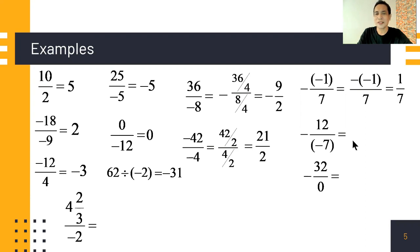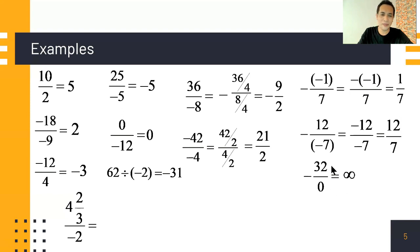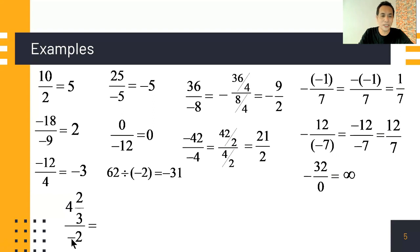For negative 2 times 12 over negative 7: negative times positive 12 is negative 12 over negative 7. We are dividing two same-sign integers, so the answer is positive 12 over 7. Then: negative 32 over zero — a number divided by zero is undefined.